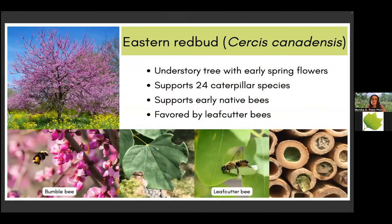Eastern redbud trees are early spring flowering trees, and one of the earliest pollinators to emerge is usually bumblebees, whose fuzzy bodies help them stay warm. When the eastern redbud finishes flowering and starts producing leaves, that's when you can see circular cuts on the leaves — leafcutter bees really favor redbud trees. They cut these circles, fold them like a taco, fill stems with the leaves, collect the pollen, form a pollen ball, lay their egg on top, then close the stem with another circle of leaf. When you see circles on the leaves, you know you're helping leafcutter bees.